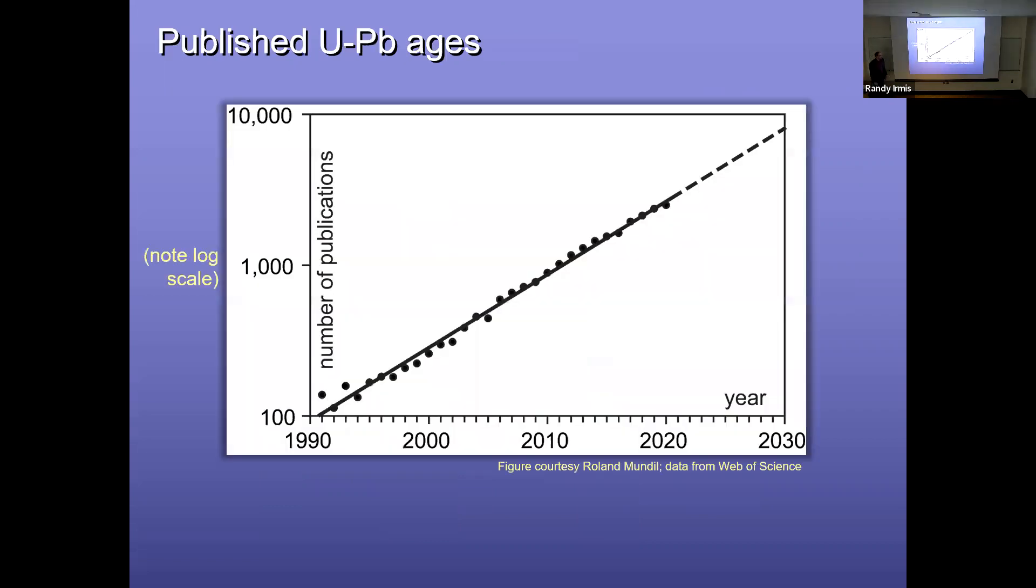And so as a result, particularly with the evolution of analytical techniques, geochronology, particularly radioisotopic dating, has exploded in the last two decades. So this looks like a linear plot, but note that the y-axis is a log scale. And so we are just producing more and more radioisotopic ages. This is just uranium-lead ages, and if you add it in argon-argon and other techniques, I'm sure it would still look about the same. But the point is, as is often the case, we're often producing data much faster than we can properly interpret it. So the ability to date stuff is ahead of our ability to really do a careful job of interpreting it. So that's what I want to talk a little bit about in the first part of this talk.